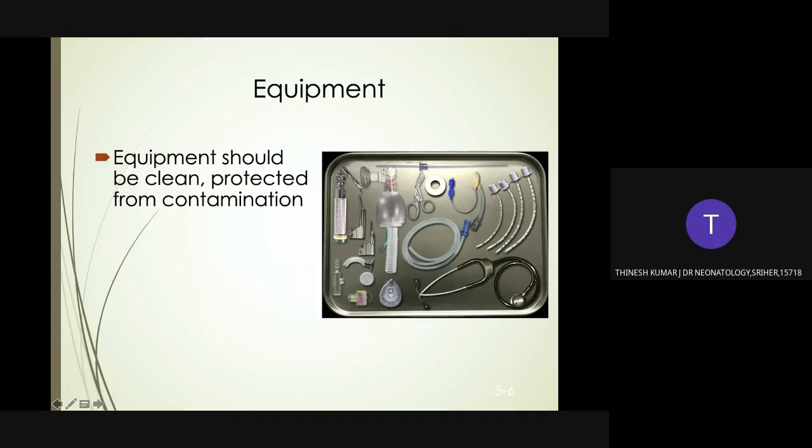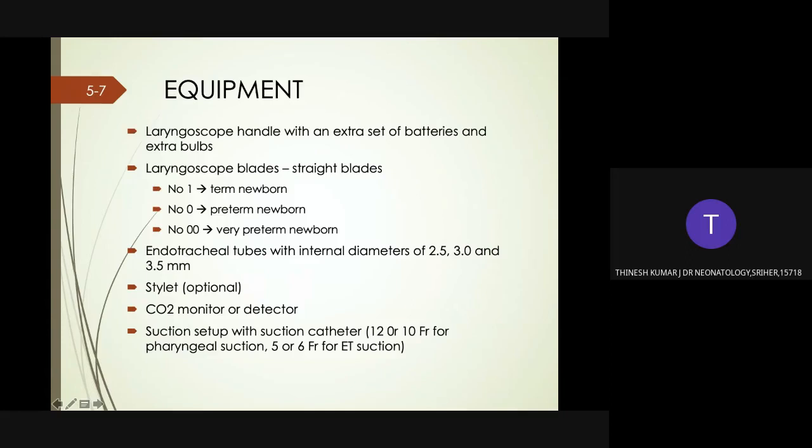What equipment should be available for airway insertion? The equipment should be clean and protected from contamination. First is the laryngoscope handle with an extra set of batteries and extra bulbs. Laryngoscope blades: blade number one for term babies, zero for preterm babies, and double zero for very preterm babies. In newborns we use straight blades rather than curved blades.